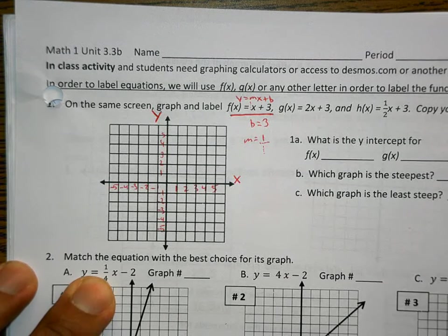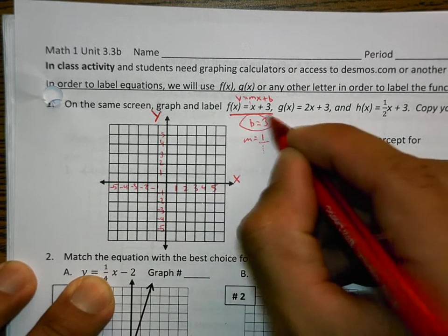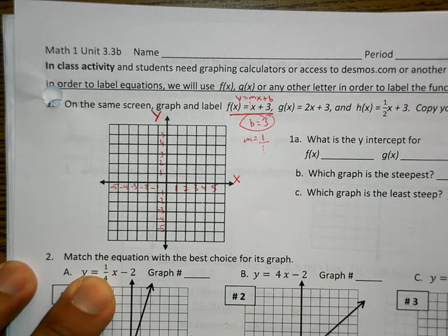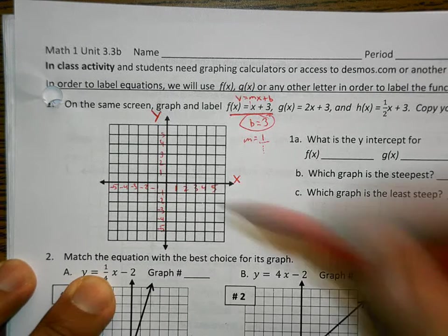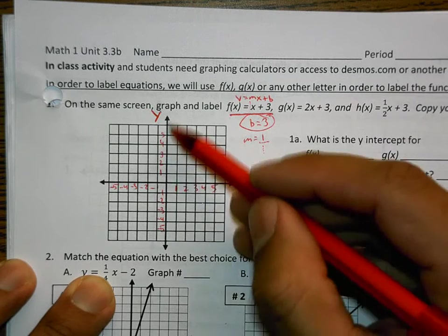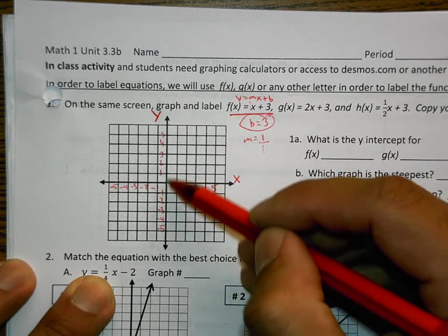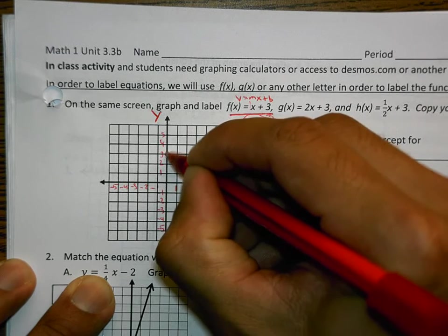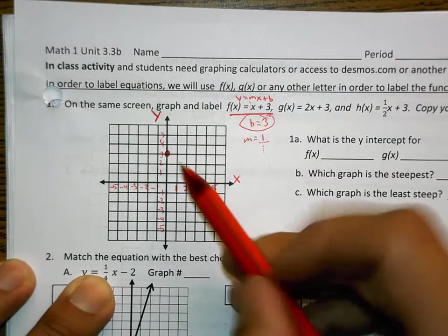And the very first point I graph is this point here. This is where I begin. B stands for begin. It's the y-intercept. It's where it crosses the y-axis. Here's the y-axis. I'm going to try to find positive 3. You see it? Right here. Up 3.